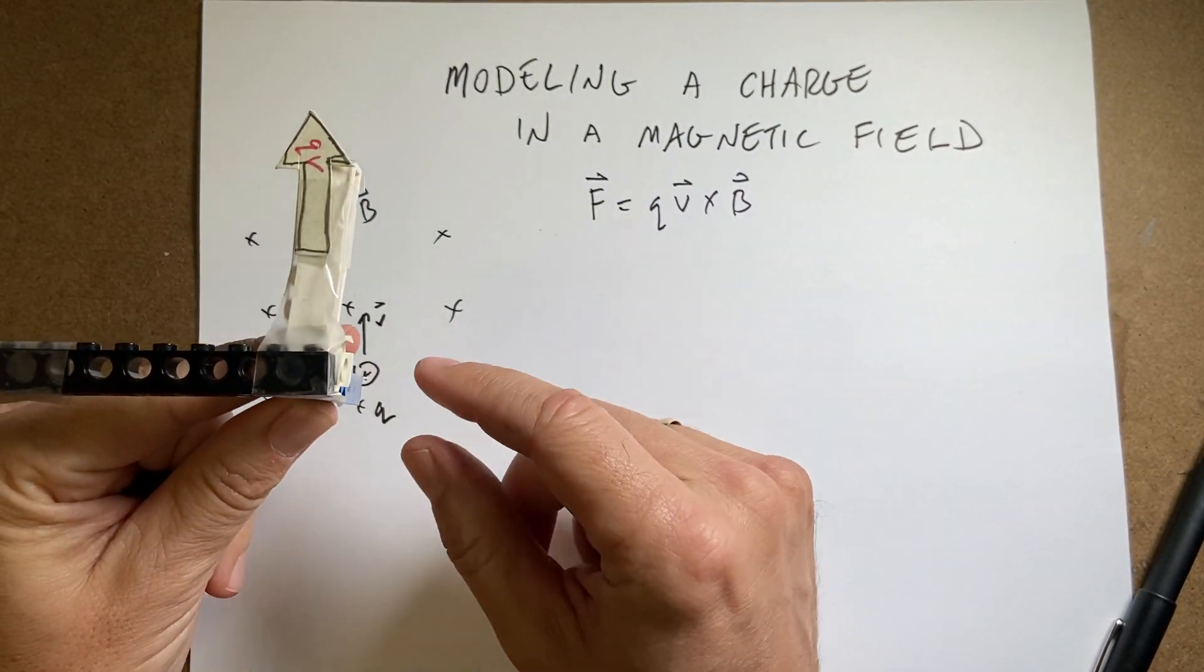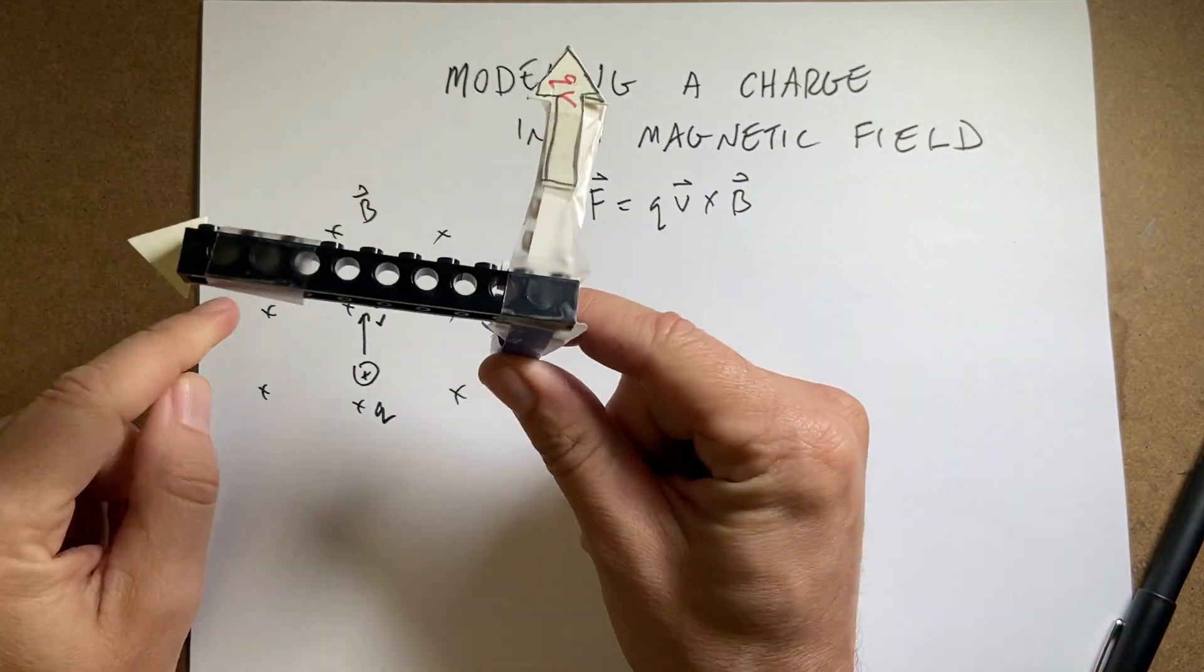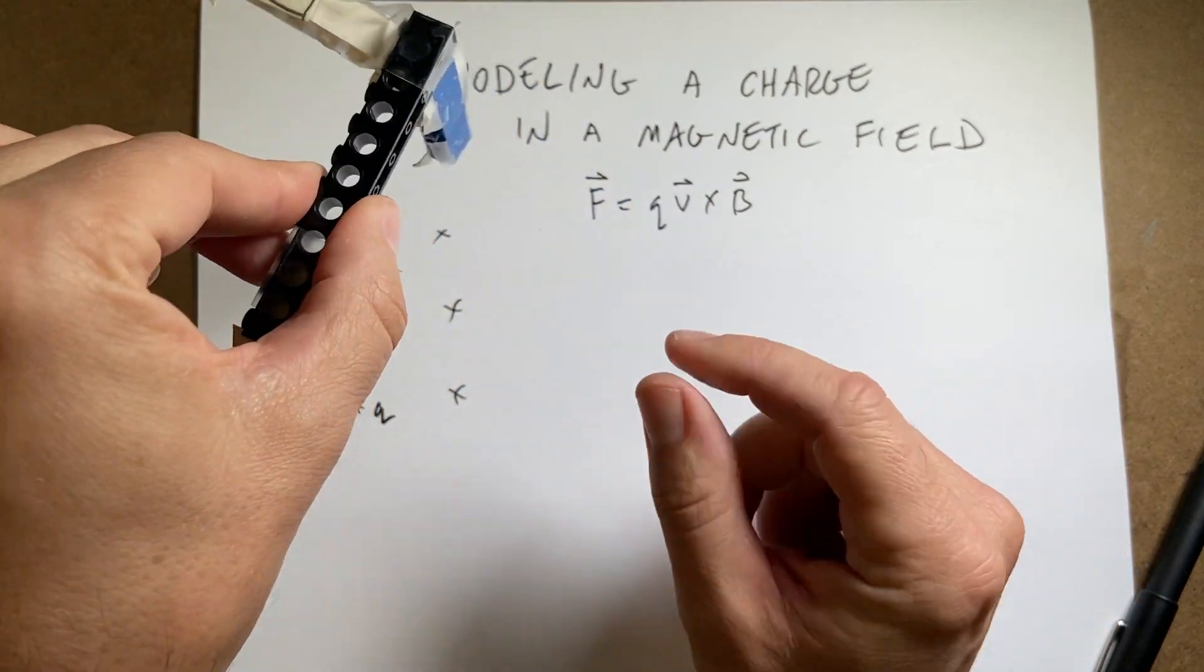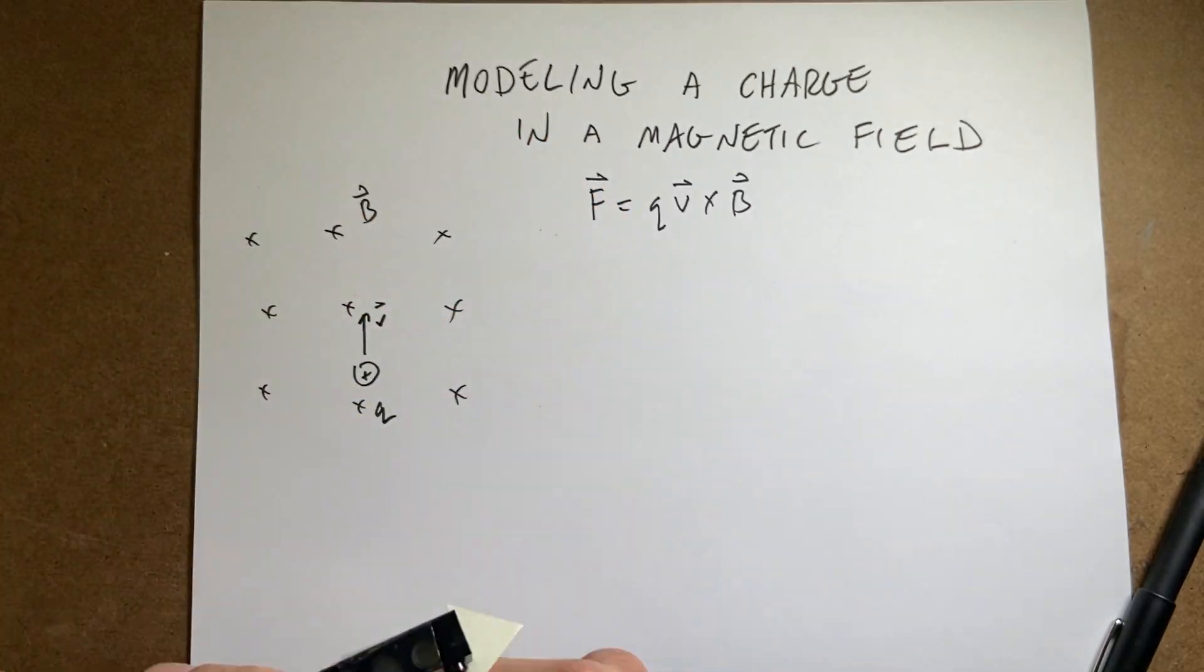So in this case, I'd have QV and have B going down. It's going into the paper, that's why it has the X's and then the force be to the side. And then no matter where it goes, it's always going to be a sideways force, which makes it move in a circle.